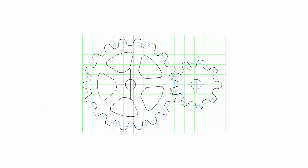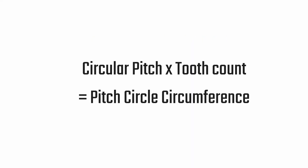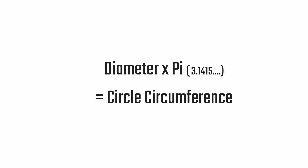To solve this problem we need to understand the building blocks of a gear. Simplifying a gear to its purest elements, it has two numbers: circular pitch and tooth count. Circular pitch is the distance between each gear tooth, also known as a cog. Tooth count is how many cogs are on a single gear. By multiplying the circular pitch with the tooth count you get the pitch circle circumference, which is our connection point from our desired diameter to a gear. And remember: diameter times pi equals a circle's circumference.